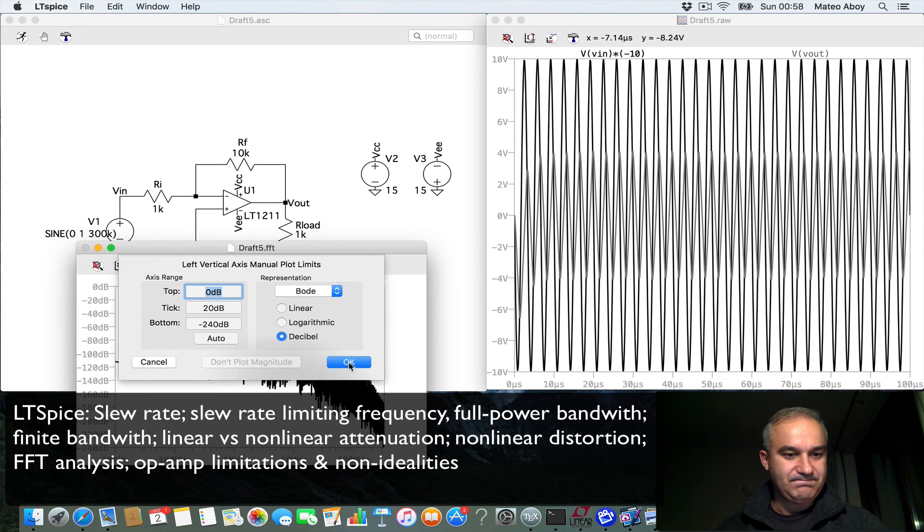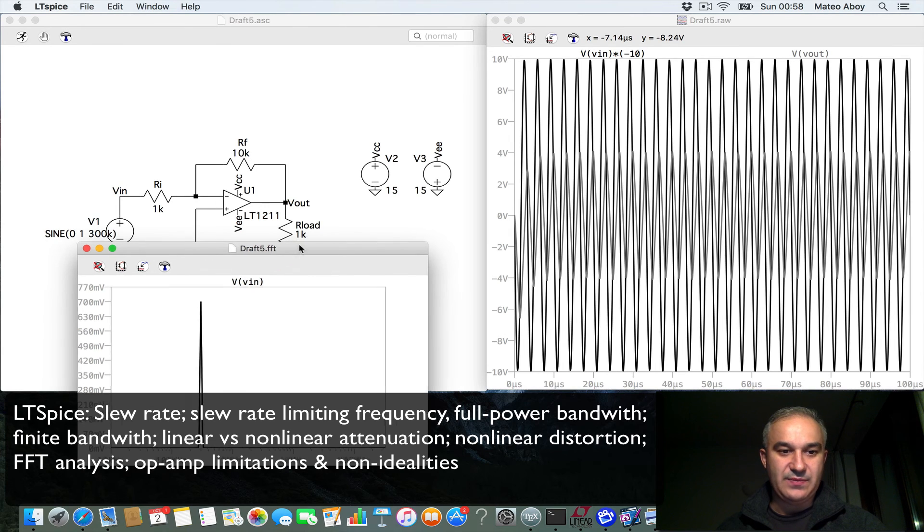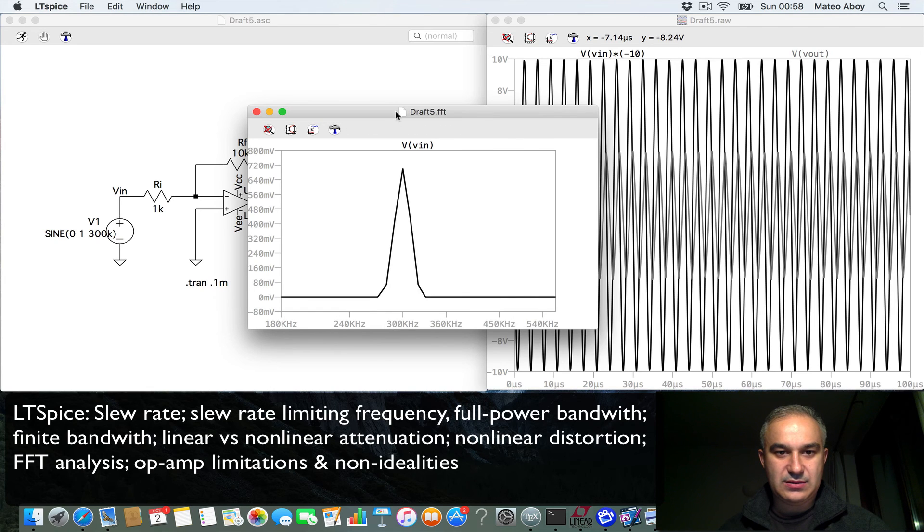So this is the FFT. I'm going to do it in linear scale. And this is the input. And what we see, as we expected, we should see a peak at 300 kilohertz and it's a pure sinusoid. And so there you got a peak exactly at 300 kilohertz. And it's a pure sinusoid.